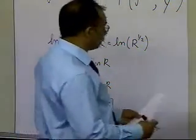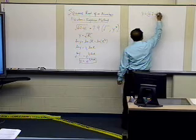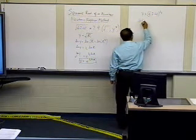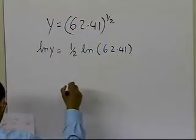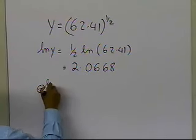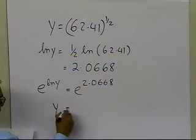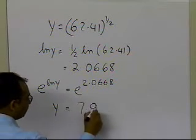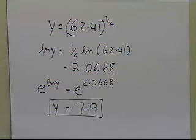Let's take the example of 62.41 and see what happens. If y equals 62.41 raised to the power of half, you get log of y equals one-half log of 62.41, and this turns out to be 2.0668. Then taking e to the power of log of y equals e to the power of 2.0668 gives y equals 7.9 — the same number obtained using the square root button or the y raised to power x button on the calculator. That's the kind of algorithm generally used to find the square root of a number.